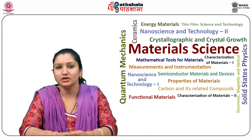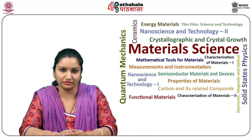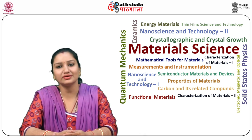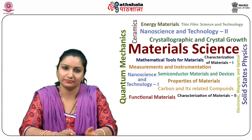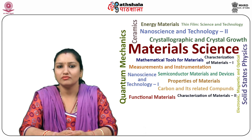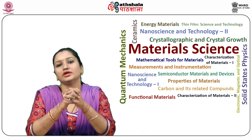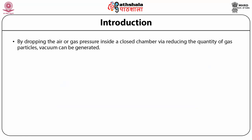The existence of high vacuum is the essential need for thin film deposition processes such that the source material particles face less obstruction due to the air and other gas particles inside the deposition chamber and can move over a large distance. There are a large number of national and international units for the measurement of vacuum. The most commonly used units are Pascal, Bar and Torr. By dropping the air or gas pressure inside a closed chamber via reducing the quantity of gas particles, vacuum can be generated.